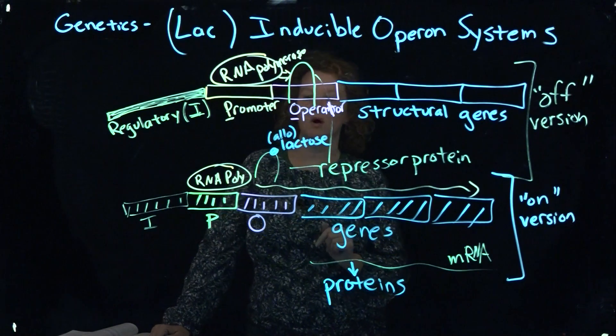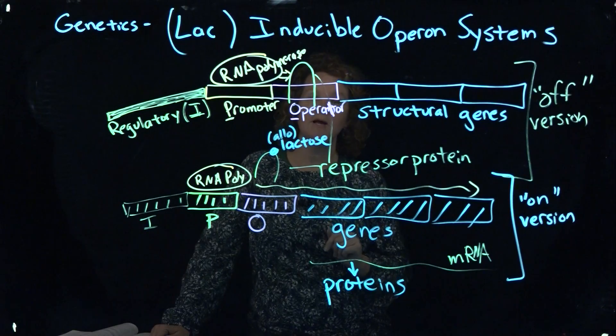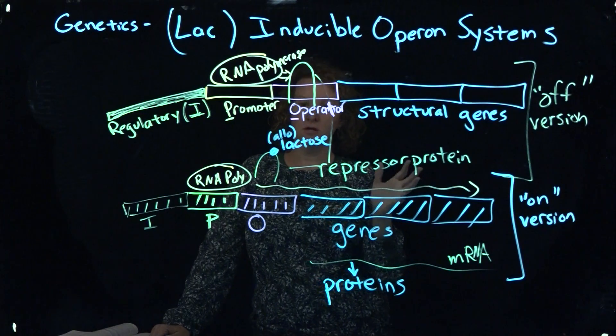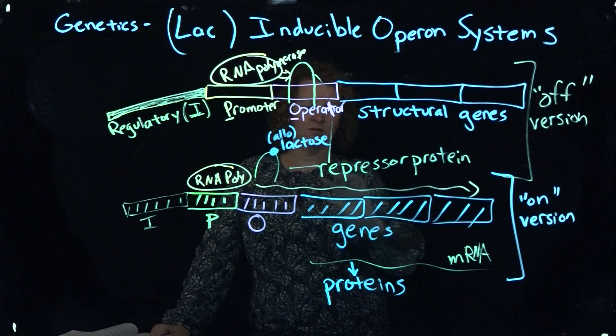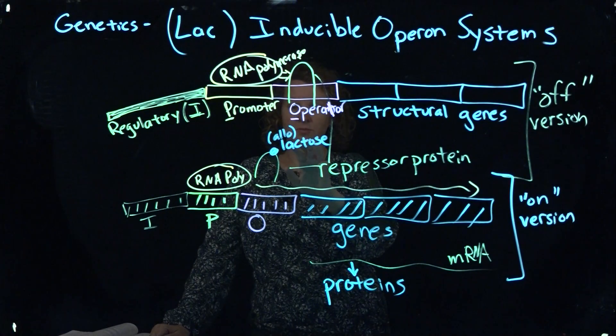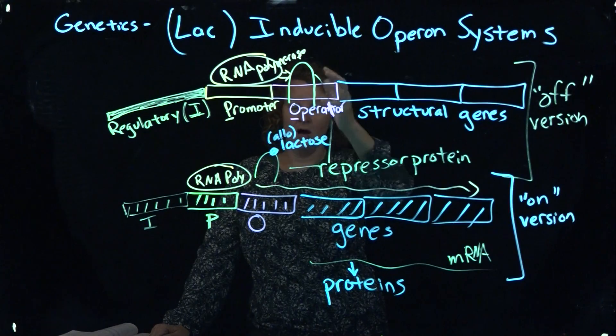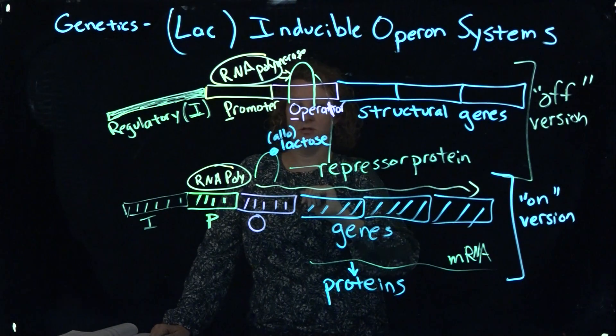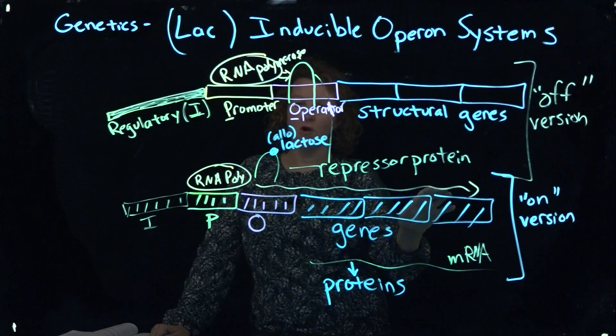There's some nice animation videos that are good to watch with that as well. I strongly encourage that. There is a repressible system that's talked about as well that's not covered here. It works the same way with the layout. However, when the substrate is present, it actually activates the system. So it's just a little opposite on how the repressor responds to the substrate. But the general flow is the same.